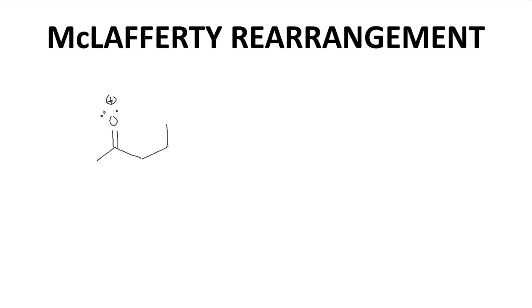Here is the parent ion. Drawn a bit differently, this parent ion has a carbonyl with an alpha beta gamma carbon. And the gamma carbon has a gamma hydrogen that can fold over and come in close proximity to the oxygen radical.